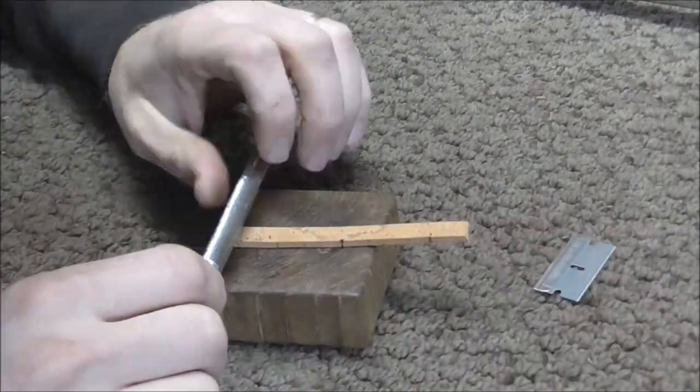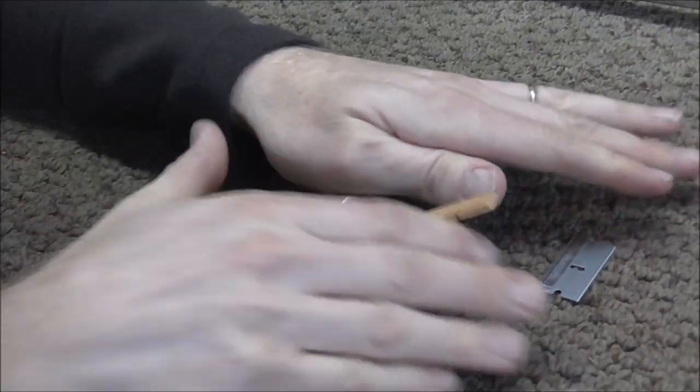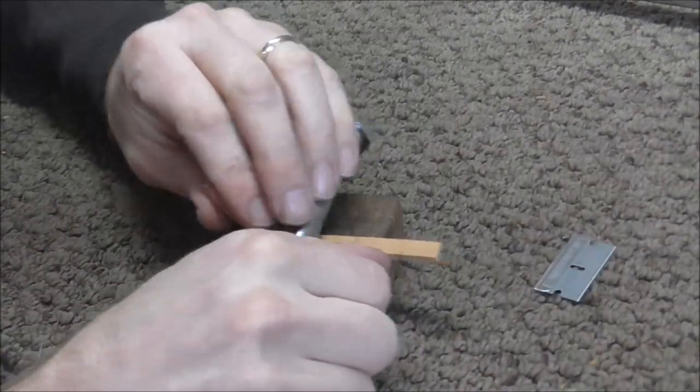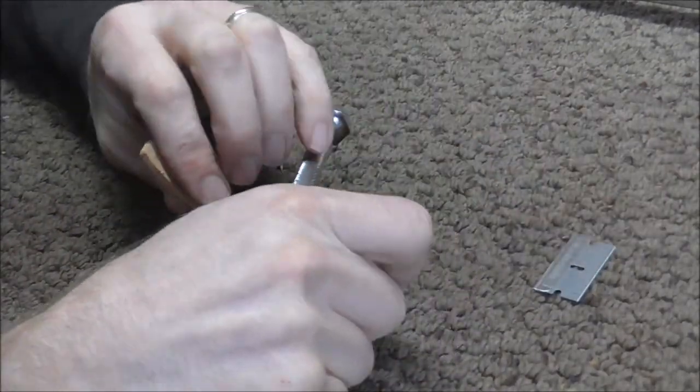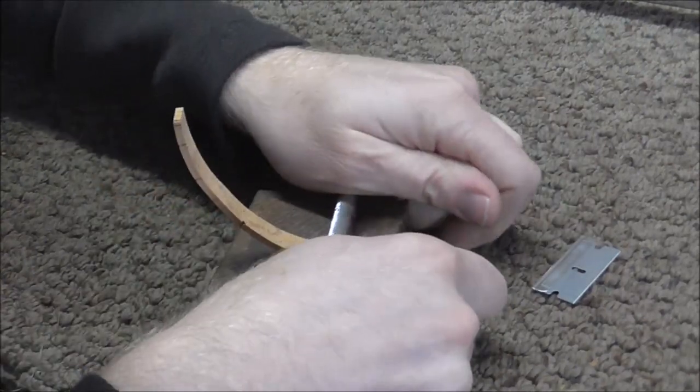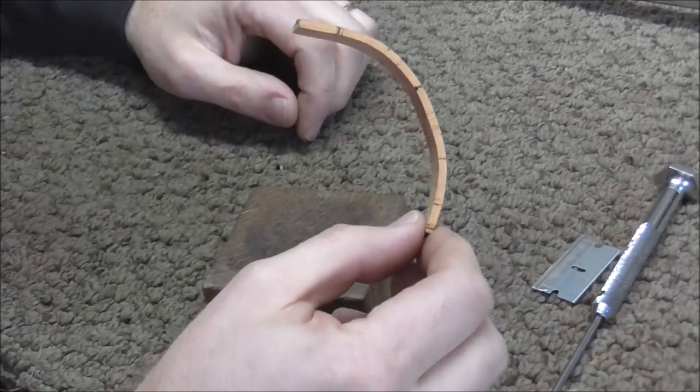To soften it up more, I'm going to take my screwdriver and roll it on it. I'm pushing down pretty hard as I'm doing this. And you can see it already wanting to start to curve a bit. Okay, now this is flexible enough, it should go around the tube without breaking.